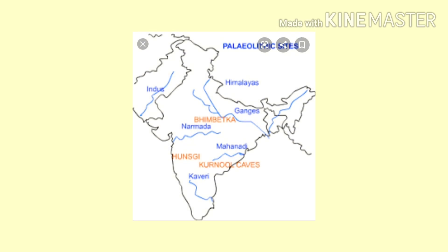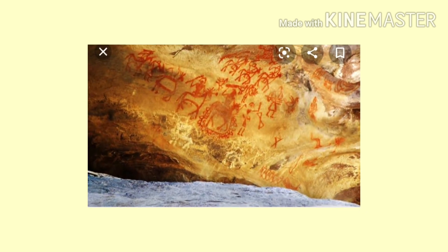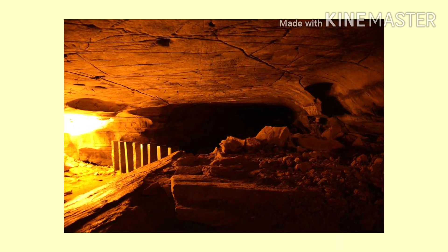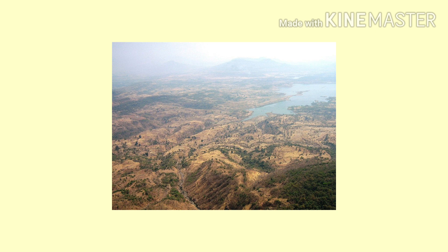This map of India shows some important sites where people lived during the Stone Age. Some major places during the Old Stone Age are: A. Bhimbetka, Madhya Pradesh; B. Hunsgi, Karnataka; C. Kurnool Caves, Andhra Pradesh. Two common factors for these sites: they are near a river, meaning availability of water was not an issue.